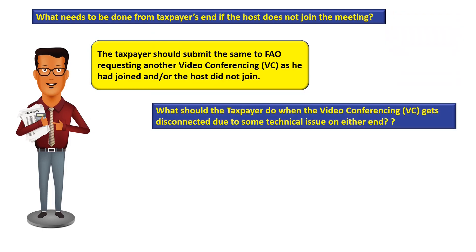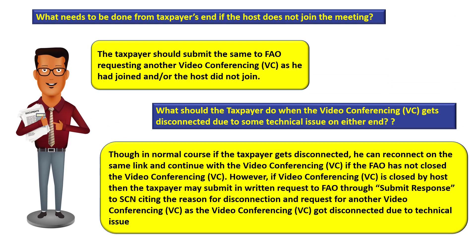If the video conferencing gets disconnected due to technical issues on either end, in the normal case the taxpayer can reconnect on the same link and continue with the video conferencing, provided the faceless assessing officer has not closed the session. However, if the video conferencing is closed by the host, the taxpayer may submit a written request to the faceless assessing officer through 'Submit Response to Show Cause Notice', citing the reason for disconnection and requesting another opportunity for video conferencing.